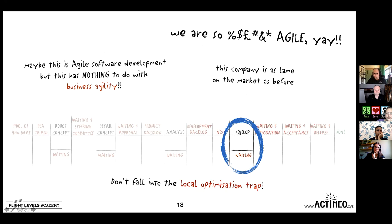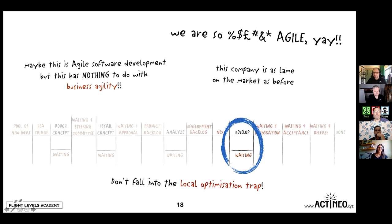We need to move away from focusing just on team-level development agility and have a much wider view of agile. This is why Klaus Leopold can say that business agility has nothing to do with the teams — it's much more important what's happening beyond the teams, between the teams, how work gets to the teams. We might be delivering things every couple of weeks, but it took three years to get it to the team in the first place. If we focus just at team level, the business is still probably quite lame at making an impact in the market. Try to avoid falling into what we call the local optimization trap and keep a systemic look at your end-to-end process.